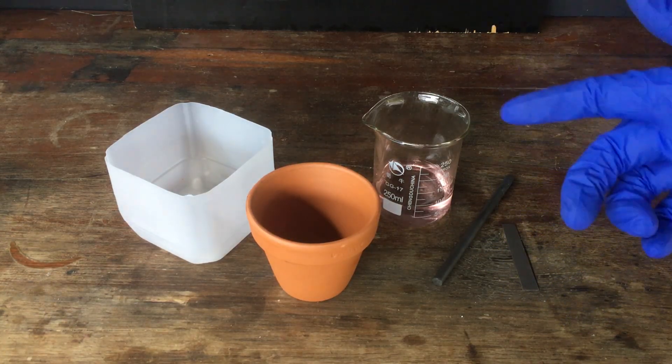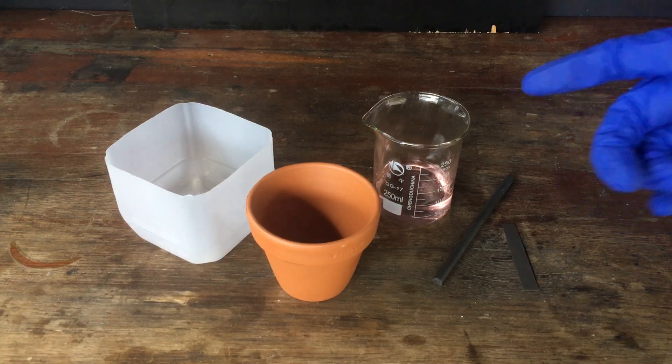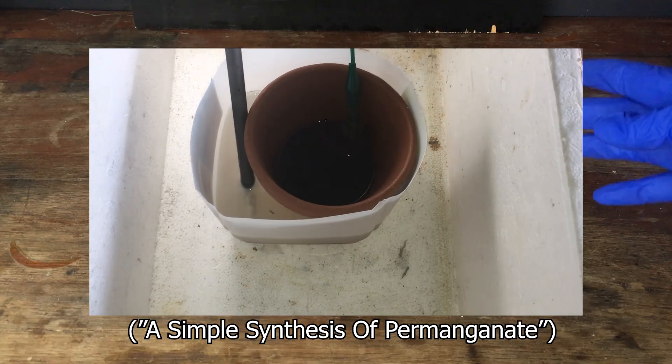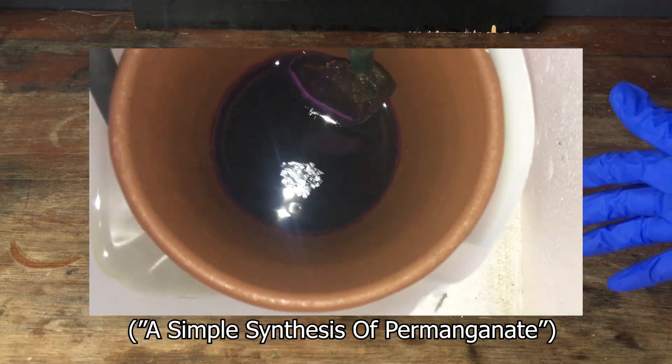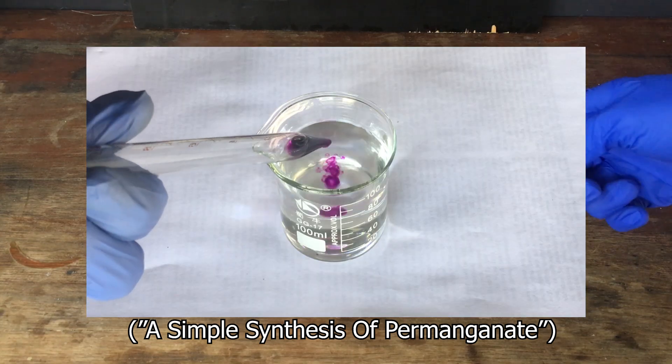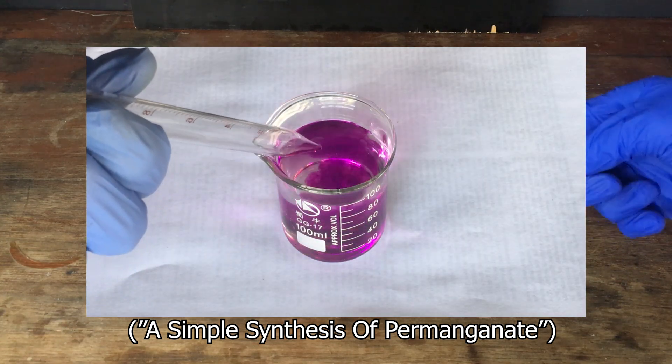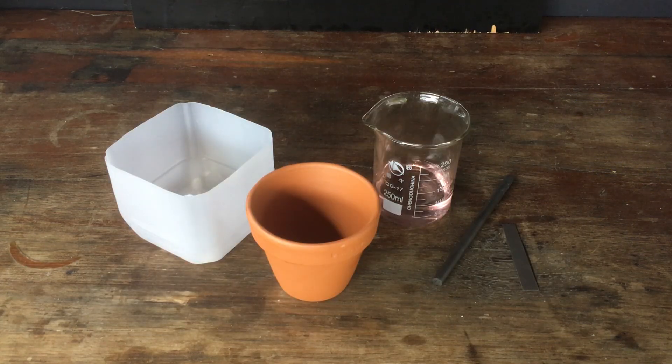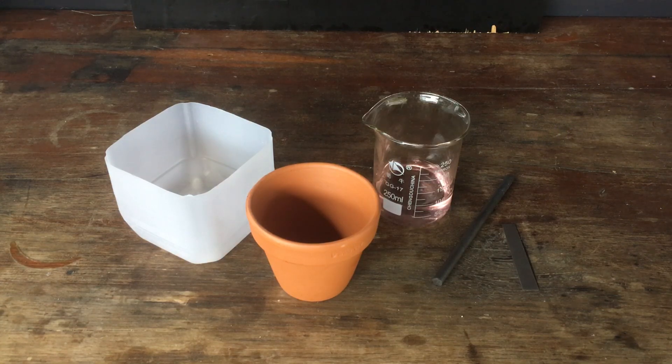If you remember a fair while back, maybe eight or nine months ago, you'll remember that we made a video about generating potassium permanganate from manganese metal using electrolysis. This was one of my favorite videos I've ever done on the channel, and I really want to revisit the project because there were a couple of things I didn't like about that synthesis.